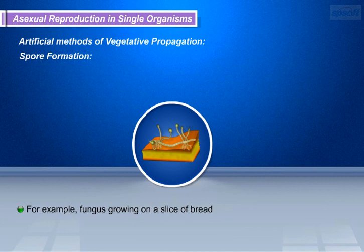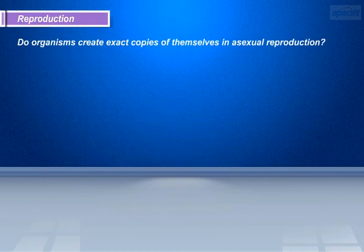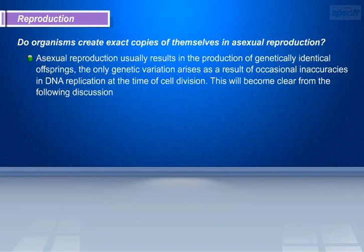For example, fungus growing on a slice of bread. Till now we studied the need for reproduction. Now we will discuss whether organisms create exact copies of themselves in asexual reproduction. Asexual reproduction usually results in the production of genetically identical offspring; the only genetic variation arises as a result of occasional inaccuracies in DNA replication at the time of cell division.